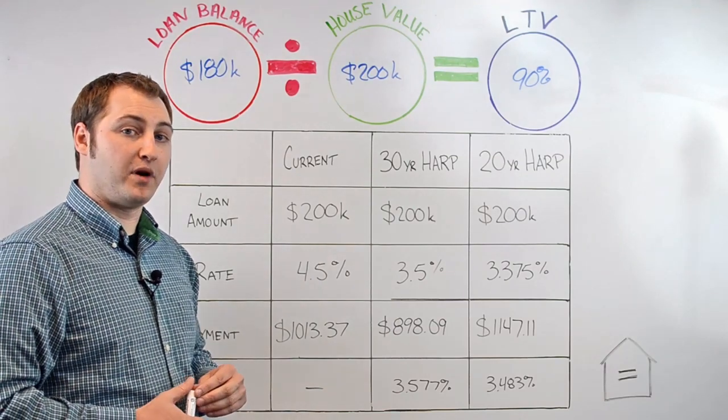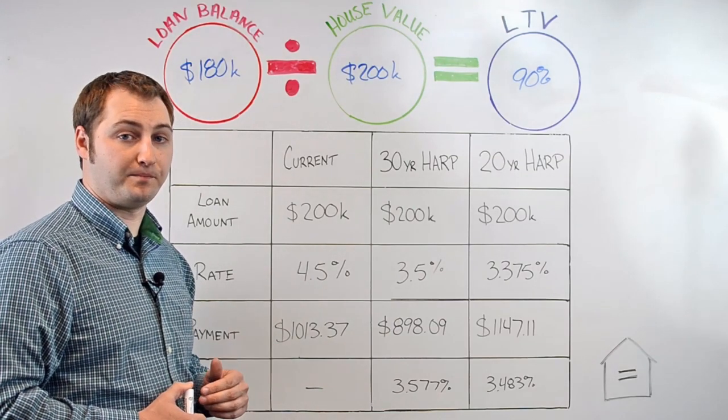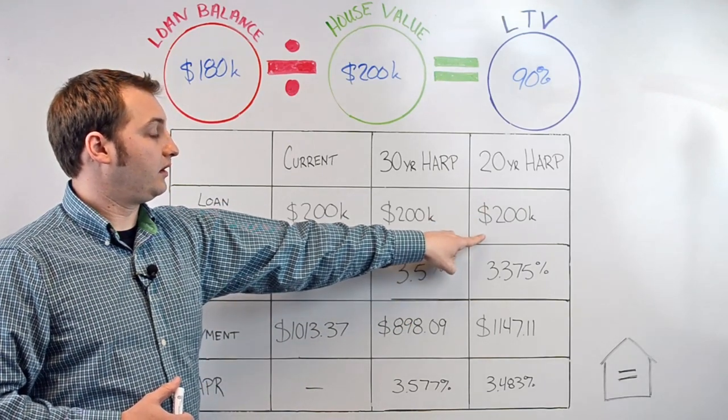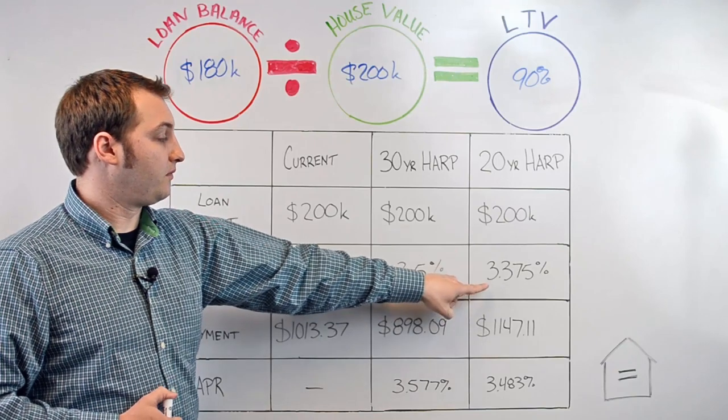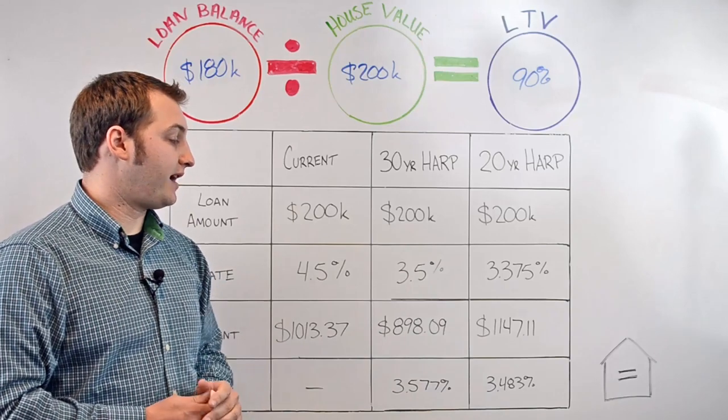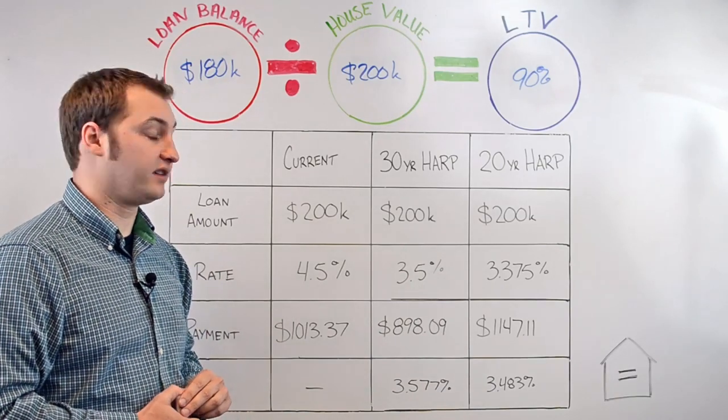We can also help save money by reducing the length of your term. For example, on a 20-year HARP refinance, a $200,000 loan amount with a proposed interest rate of 3.375%, your monthly mortgage payment would be $1,147.11.